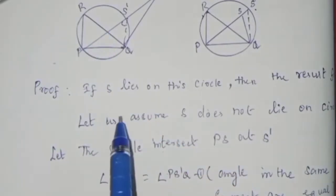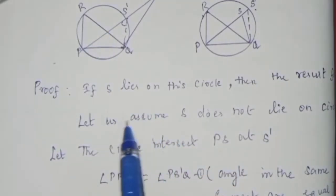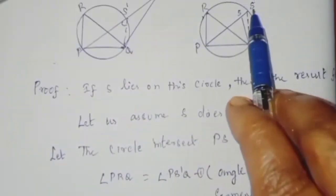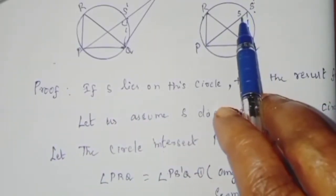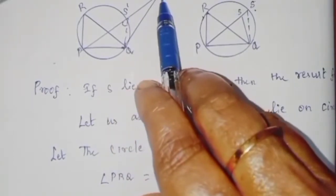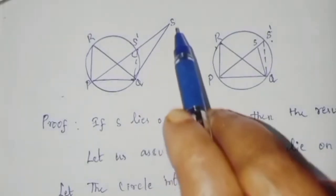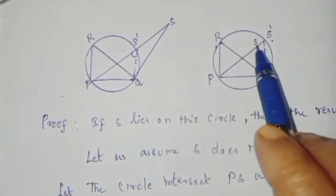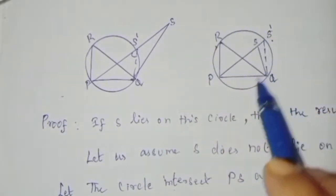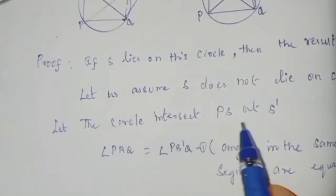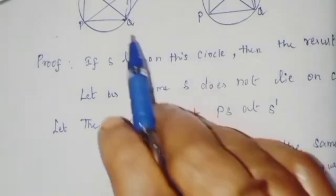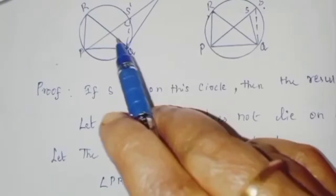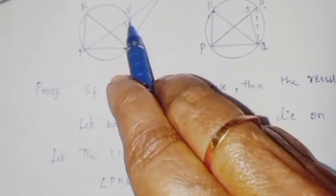Let us assume S does not lie on the circle. If S is outside, we mark it. The circle is drawn. Let the circle intersect at a point S' on the line segment PS. The points P and S' intersect the circle.